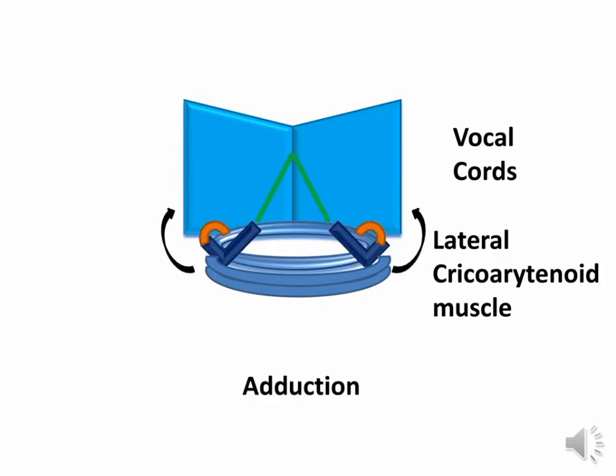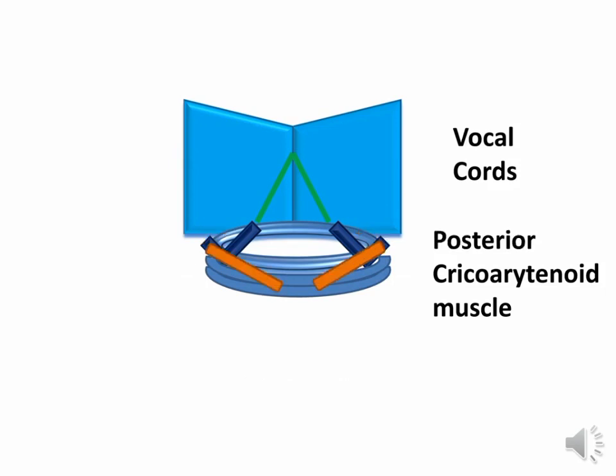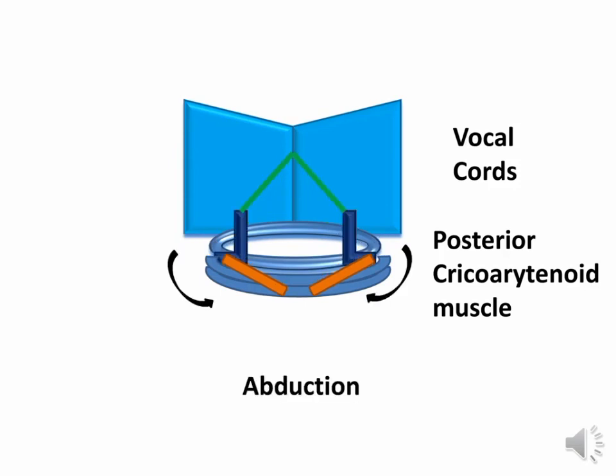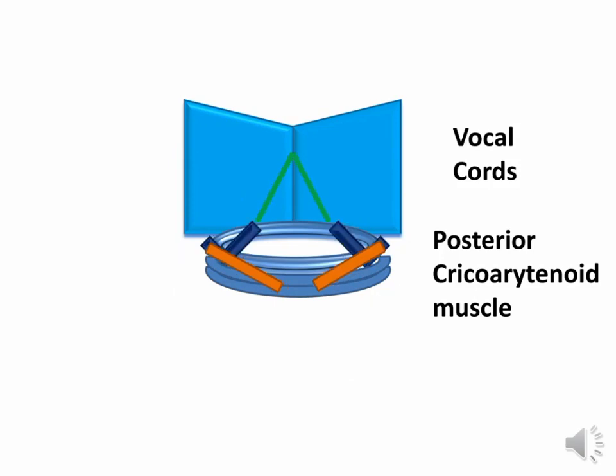The posterior cricoarytenoid muscle is attached to the posterior aspect of the muscular process of the arytenoid. The contraction brings about the anterolateral movement of the vocal process and the abduction of the vocal cord.